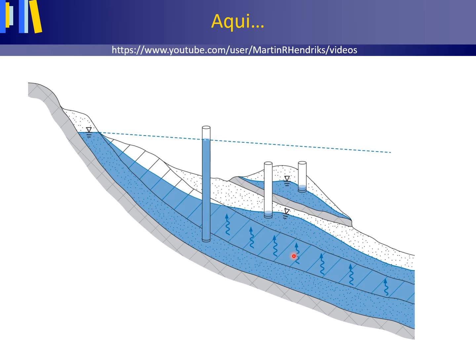Groundwater captured between two impermeable layers is confined groundwater and the aquifer is a confined aquifer. Groundwater captured between two confining layers — one or both being semi-permeable — is called semi-confined groundwater, and the aquifer is a semi-confined aquifer or leaky aquifer.